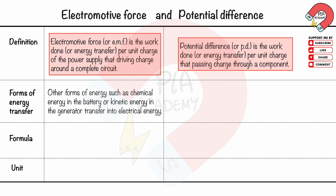The electromotive force involves other forms of energy — such as chemical energy in batteries, or kinetic energy in a generator — being transferred into electrical energy. The potential difference is the electrical energy transferred into other forms of energy.